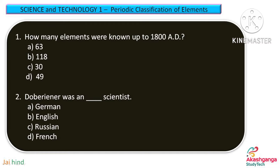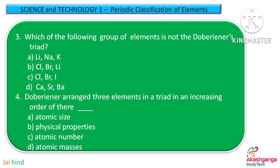Question 2. Dobereiner was a … scientist. Option A: German, Option B: English, Option C: Russian, Option D: French.